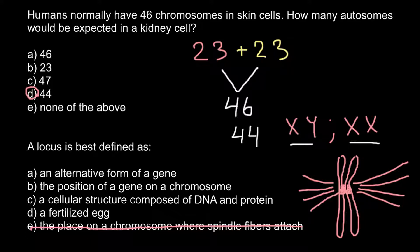Answer D: a fertilized egg we call a zygote, so that is also incorrect — cross it out. Answer C: a cellular structure composed of DNA and protein we call the nucleus, so we can cross that out as well. Now we are left with two answers. Answer A: an alternative form of the gene we call an allele, so we can cross that out too. That leaves only one correct answer — a locus is best defined as the position of a gene on a chromosome, meaning its position or location. So the correct answer is B.